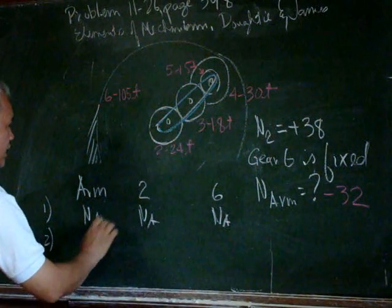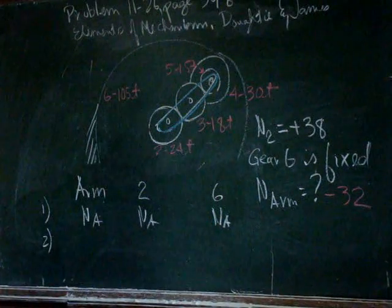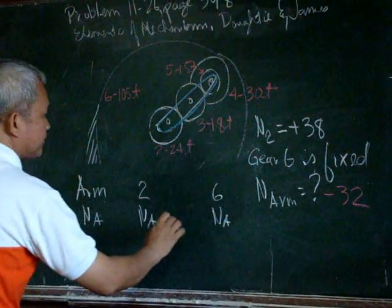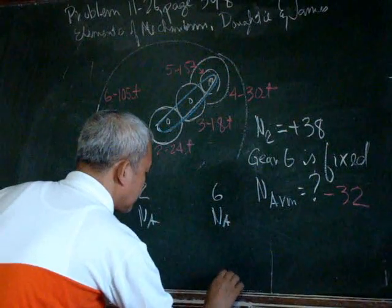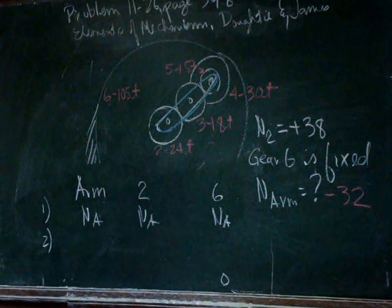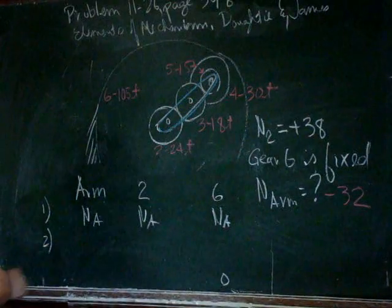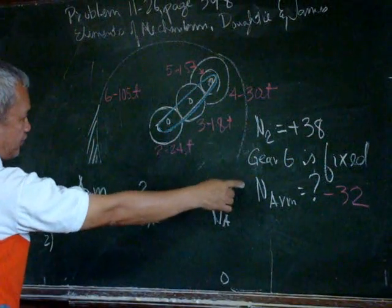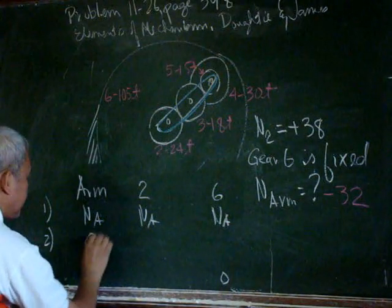Since 6 is fixed, we have to give it a 0 as a final rotation. But of course, when we have a fixed arm, we have to have a 0 here.